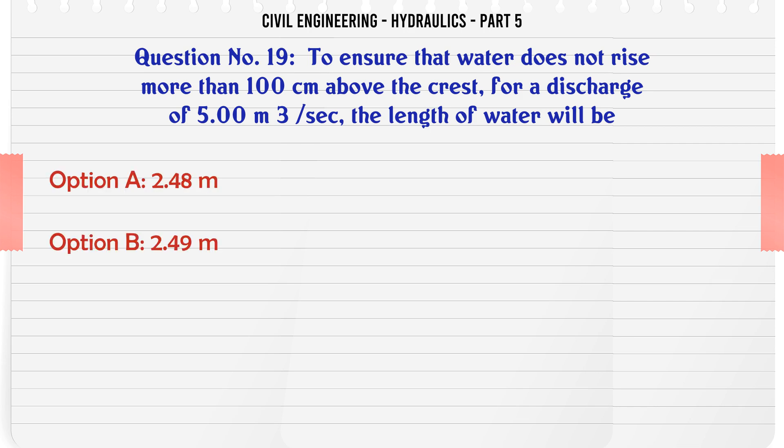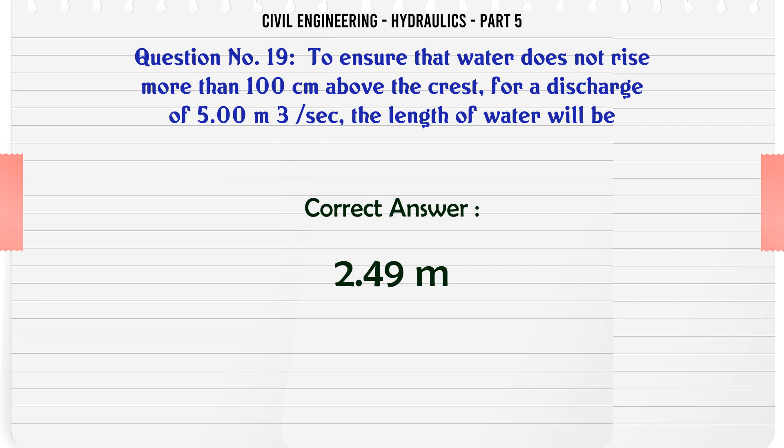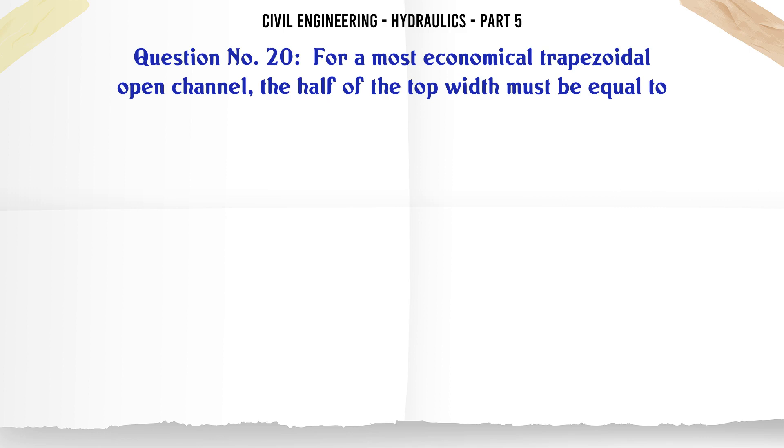To ensure that water does not rise more than 100 cm above the crest for a discharge of 5.00 m³/sec, the length of the weir will be: A. 2.48 m, B. 2.49 m, C. 2.50 m, D. 2.51 m. The correct answer is 2.49 m.